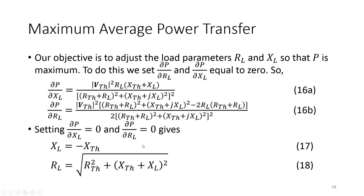Our objective is to adjust the load parameters RL and XL to reach the maximum power transfer condition. We find the maximum value by taking the first-order partial derivative — we take the partial derivative with respect to XL and RL, since we need to find the conditions at which maximum power transfers to the load, and equate them to zero.